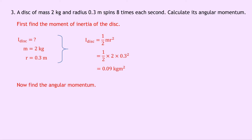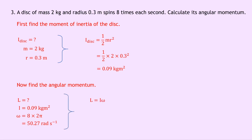Now that we've got the moment of inertia of the disc, we can find the angular momentum. We're trying to find L; moment of inertia I is 0.09 kilogram meters squared. To find angular velocity omega, we take the number of times the disc spins — which is 8 — and multiply by 2 pi, because 2 pi radians is the angular displacement for one full rotation. So spinning 8 times each second gives 8 times 2 pi, which is 16 pi, giving 50.27 radians per second. Writing L equals I omega and substituting in, we get 0.09 times 50.27, which gives a final answer of 4.5 kilogram meters squared per second.